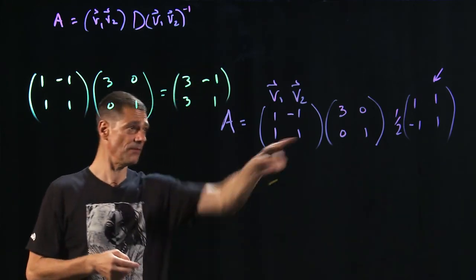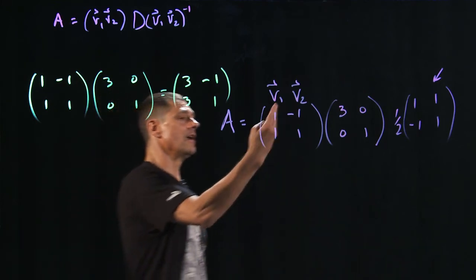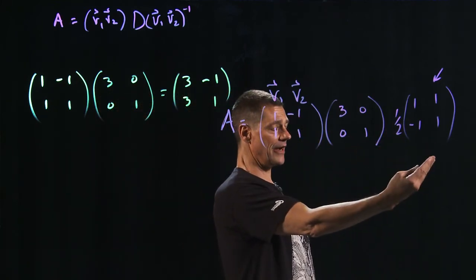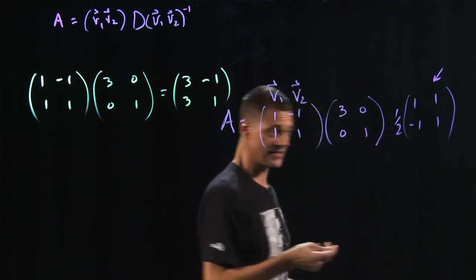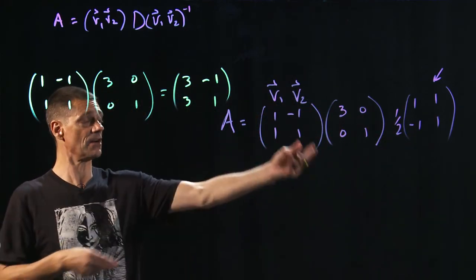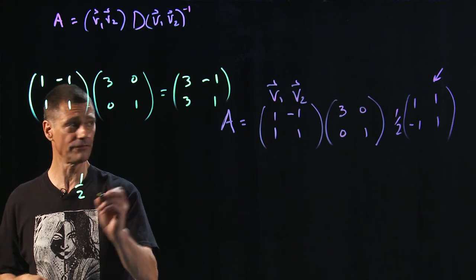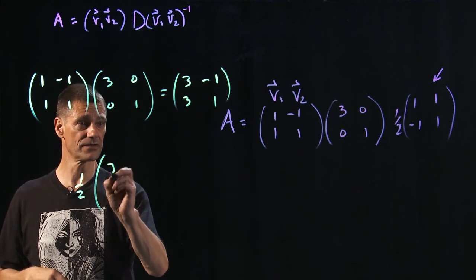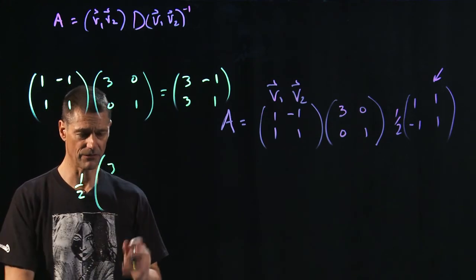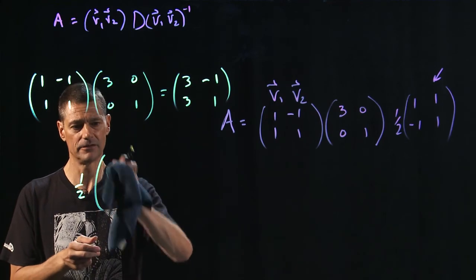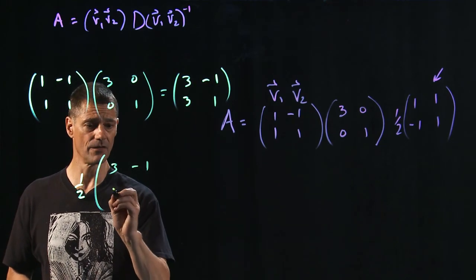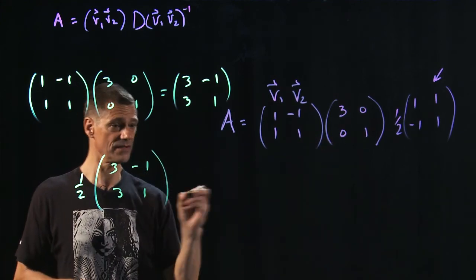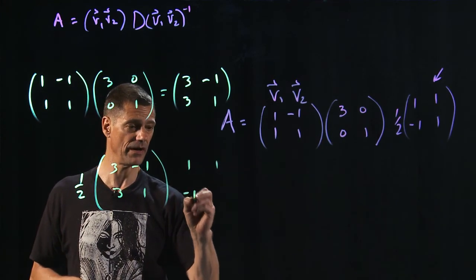Now we're going to take this and multiply it by this matrix. You could bring the 1 half inside and multiply it. But remember, scalars come in and out of matrices. So this would be the same as, I'm just going to bring it all the way up. This will be 1 half times this matrix, 3 minus 1, 3, 1, times this, which is 1, 1, minus 1, 1.